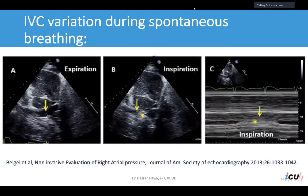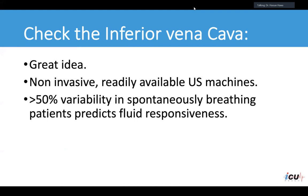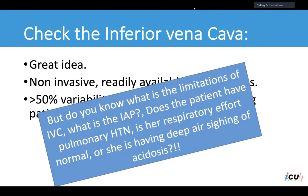The IVC can be used to assess variation during spontaneous breathing, though it is not as reliable as during mechanical ventilation. For significance, variability should be more than 50%, compared to only 15% in mechanically ventilated patients breathing passively. Limitations include the effect of intra-abdominal pressure, pulmonary hypertension, and the depth of respiratory effort on IVC assessment reliability.